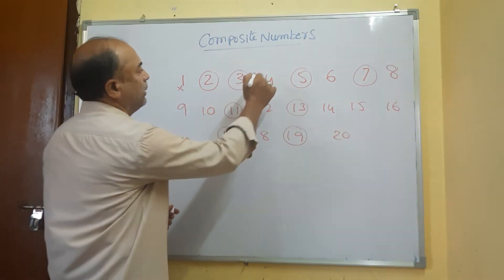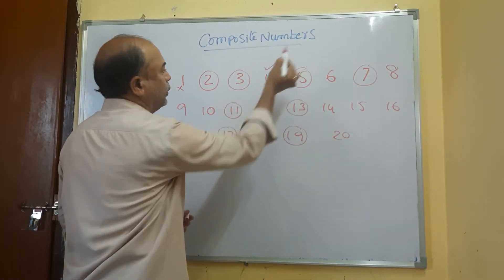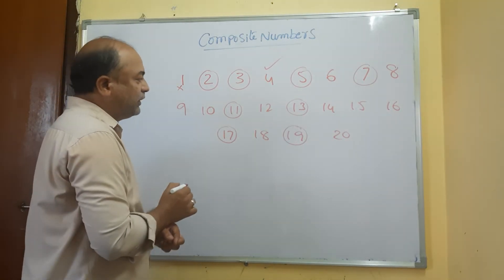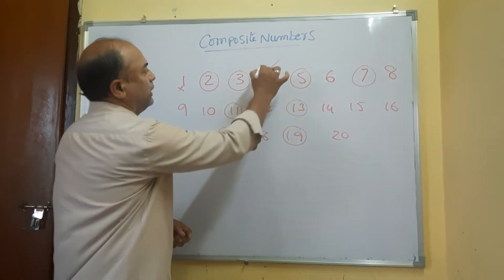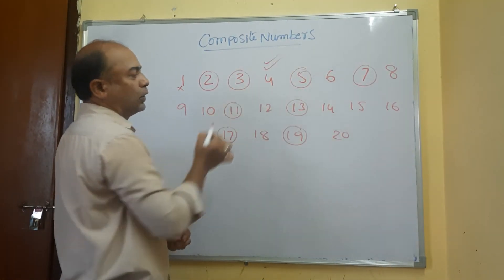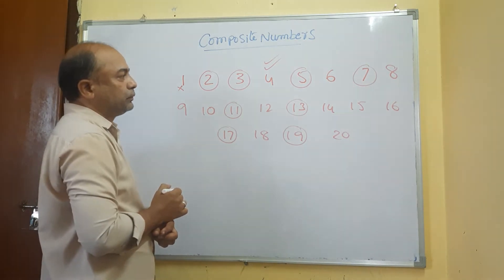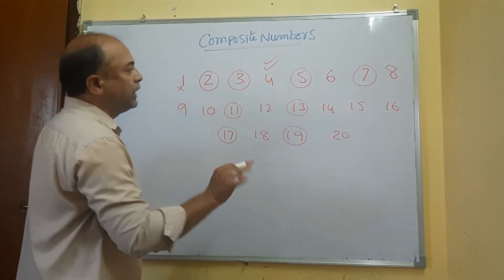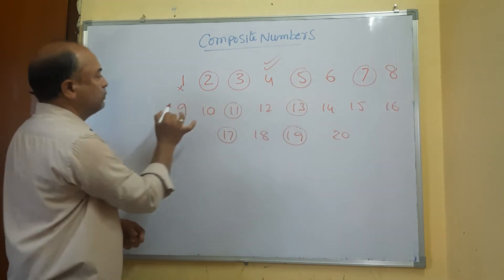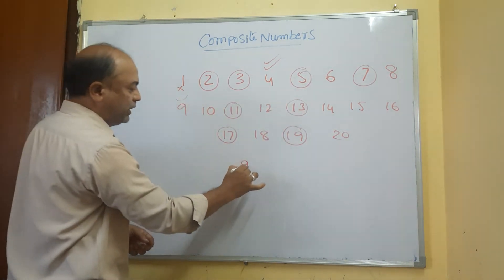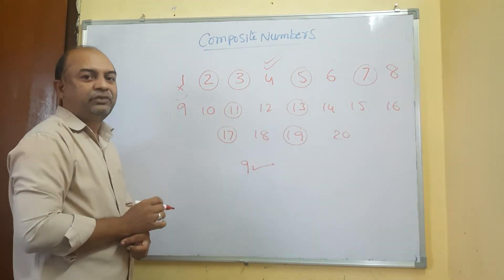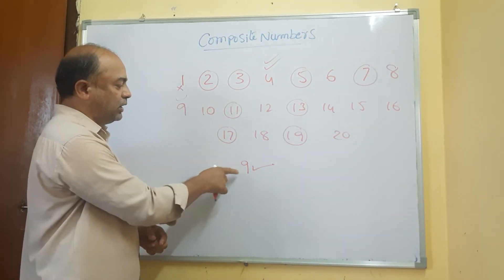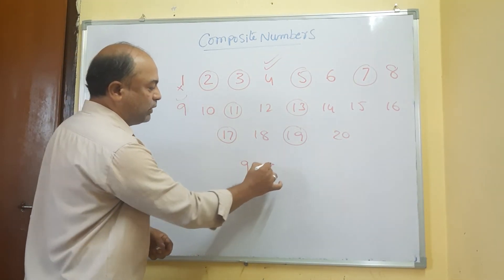The smallest composite number is 4. The smallest even composite number is 4. The smallest odd composite number is 9.